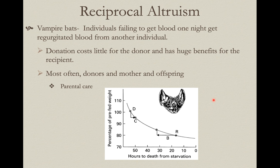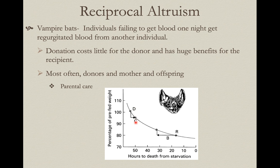In a stable social relationship where they all know each other, Jim comes back full while Bob didn't feed well. Bob asks Jim to regurgitate some blood. On a chart, you can see that just a few days without feeding increases the potential for starvation. The donor's cost — D — and the recipient's benefit — C — from regurgitated blood are both shown: the cost to the donor is relatively minor while the benefit to the recipient is large.